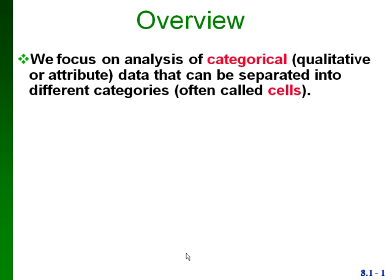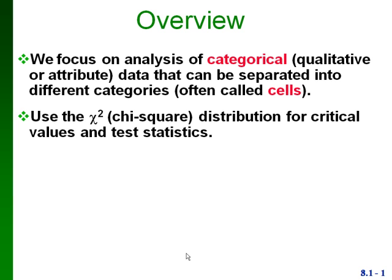This is the first video for chapter 12. In this one we'll talk about doing hypothesis tests for a multinomial population for goodness of fit. In all of chapter 12 we'll be looking at categorical data, separating it into different categories. For this we'll be using the chi-square distribution to get our critical values and to look at test statistics.